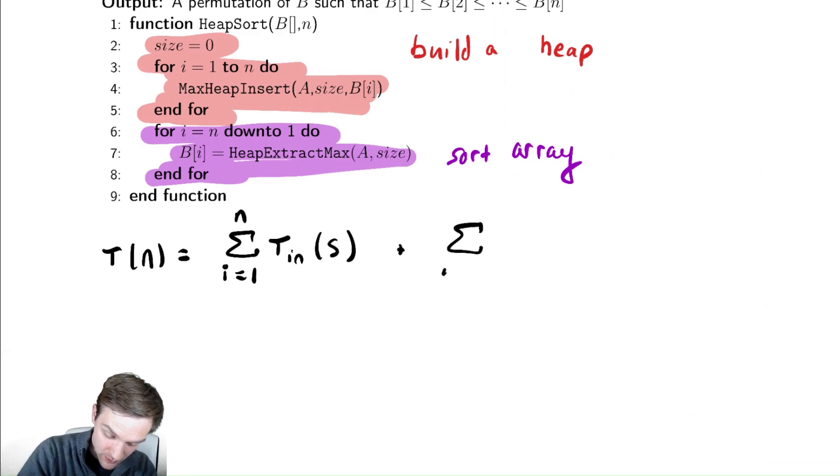Plus, the sum from i equals n to 1. We have a down to there so that's a little awkward. We'll deal with this strange looking summation in a second. Of the time it takes to extract max as a function of the size of the heap. And this is a generic way to write down this runtime without filling in too many of the details.